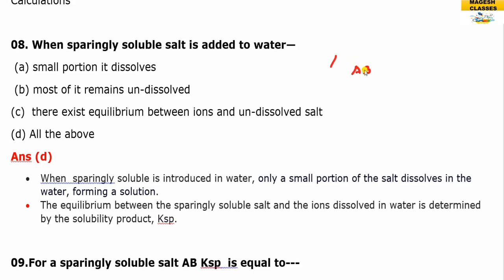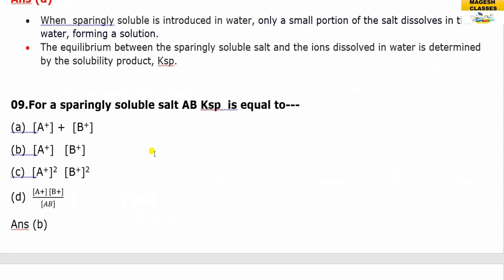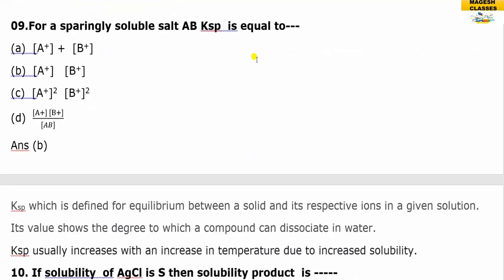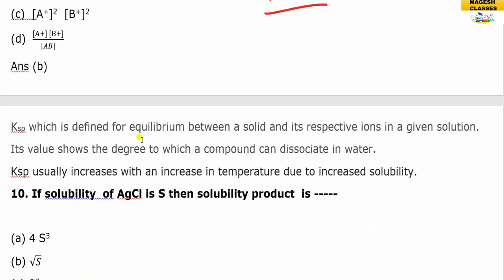For a sparingly soluble salt AB, there is an equilibrium between the ions and the unionized part. KSP — the solubility product — is defined as the equilibrium between the solid and its respective ions in a given solution. Its value shows the degree to which the compound dissolves in water, and it increases with temperature. The solubility of the ions are multiplied to give KSP.